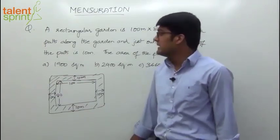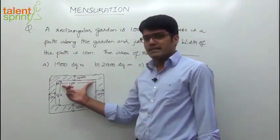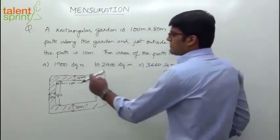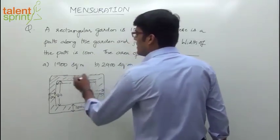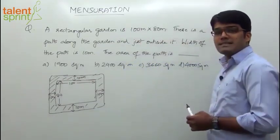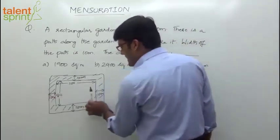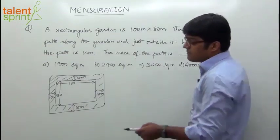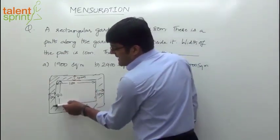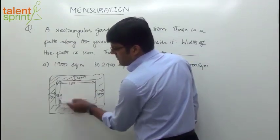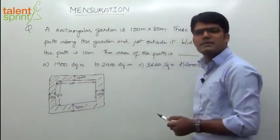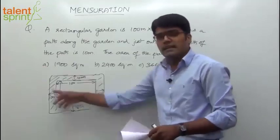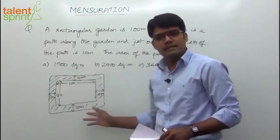Now to find out the area of the outer rectangle, we need to know its length and breadth. This inner length is 100 meters. What will be the length of the outer rectangle? 100 plus 10 plus 10 — 10 on the left side and 10 on the right side extension. Likewise, what is the breadth of the outer rectangle? The inner breadth is 80, so the outer breadth is 80 plus 10 plus 10. So area of the outer rectangle minus area of the inner rectangle gives the final shaded area.